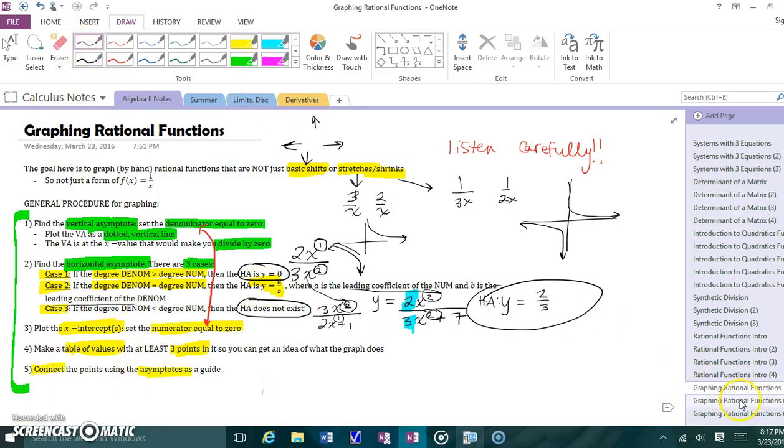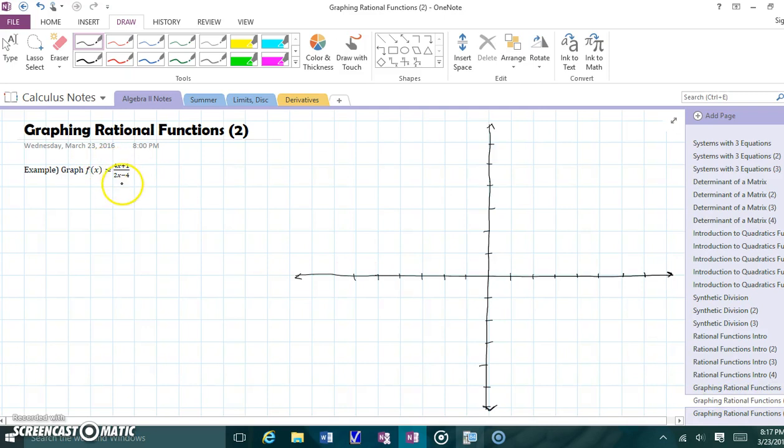Make sure you have all this written down. Let's do an example together here. Let's graph 4x plus 1 over 2x minus 4. I'm going to go right through the steps one by one here.